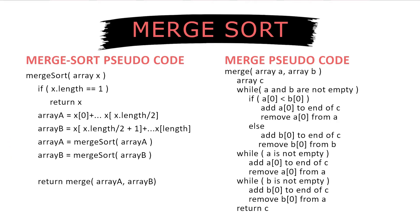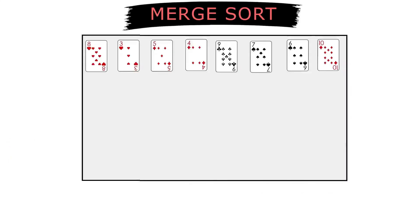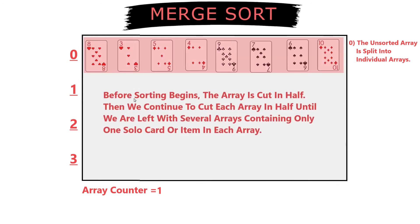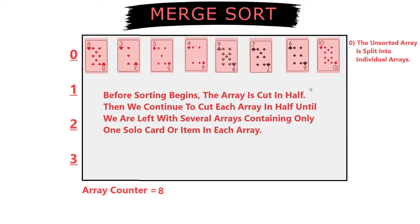So let's take a look at the merge sort algorithm. Merge sort begins by taking the array of cards and splitting it in half. This process repeats until you are left with several arrays with a single item in each array.